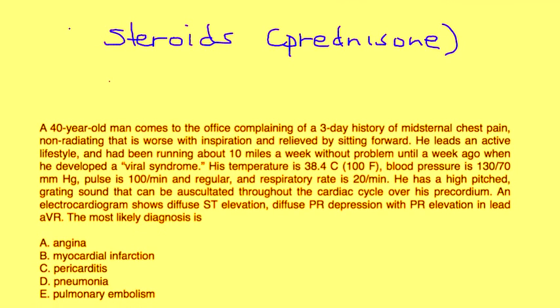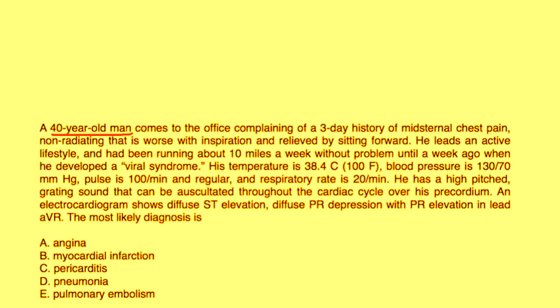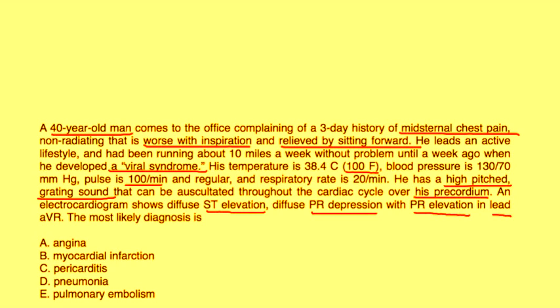Clinical vignette: A 40-year-old man comes to the office complaining of a three-day history of mid-sternal chest pain, non-radiating, that is worse with inspiration and relieved by sitting forward. He developed a viral syndrome a week ago. Temperature is 100, blood pressure 130, pulse 100, respirations 20. He has a high-pitched grating sound over his precordium. EKG shows ST elevation, PR depression, with PR elevation in lead AVR. Most likely diagnosis is pericarditis — all the classic clues point to it.